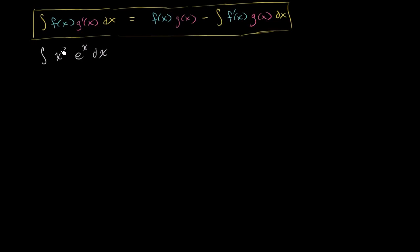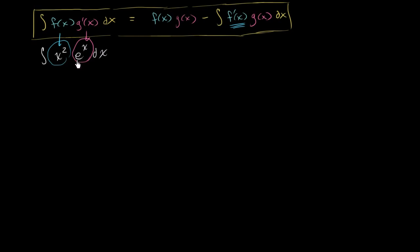So in this case, if I take the derivative of x squared it becomes simpler — it becomes 2x. And if I take the antiderivative of e to the x, it doesn't become any more complicated. So let's assign f of x to be equal to x squared, since we want the function whose derivative becomes simpler. And let's assign g prime of x to be equal to e to the x, because its antiderivative is still just e to the x.